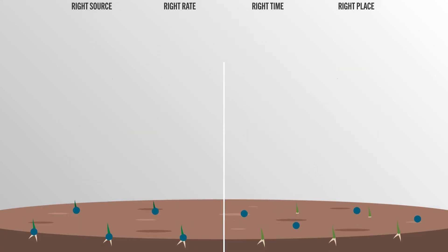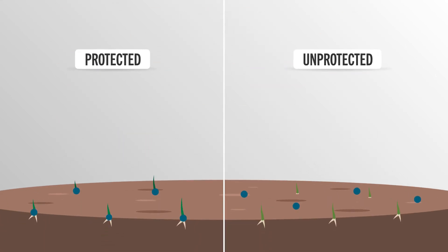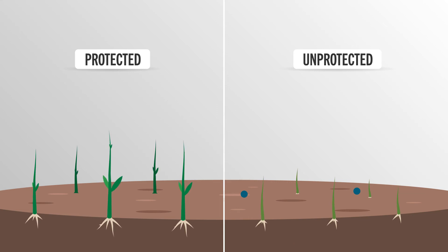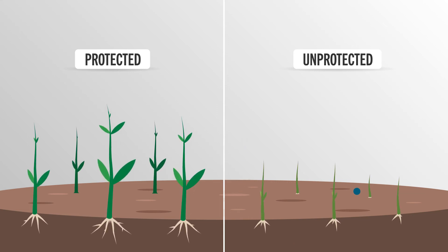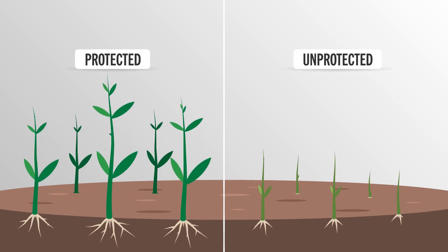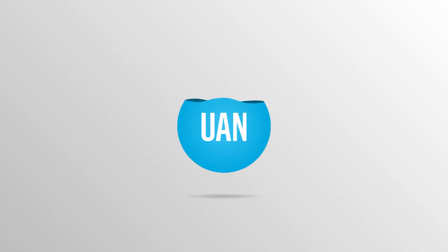And when left unprotected, the nitrogen may not be readily available for when a crop needs it most, meaning a grower may miss out on a potential yield advantage — much like if they would have left spilled corn seed unplanted.